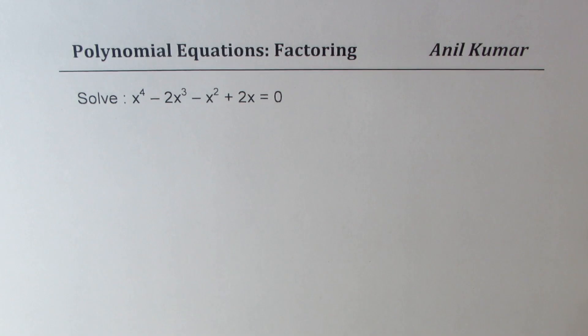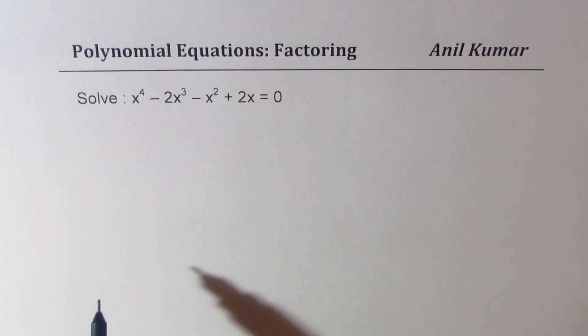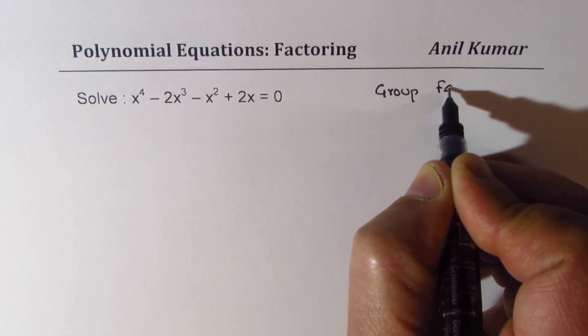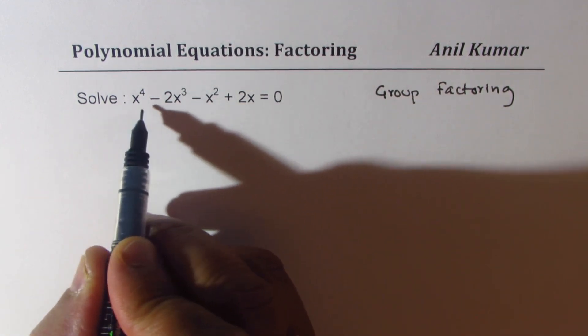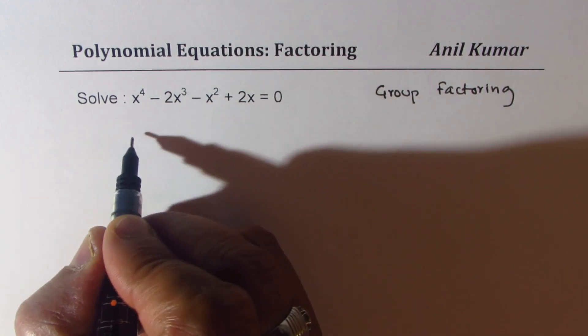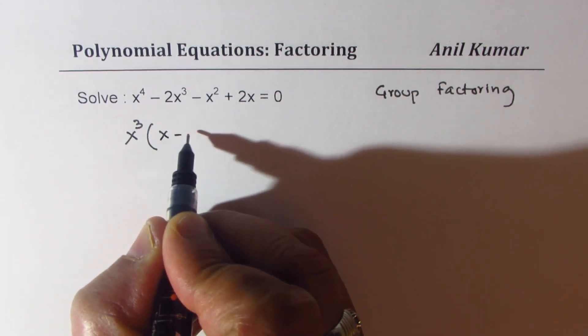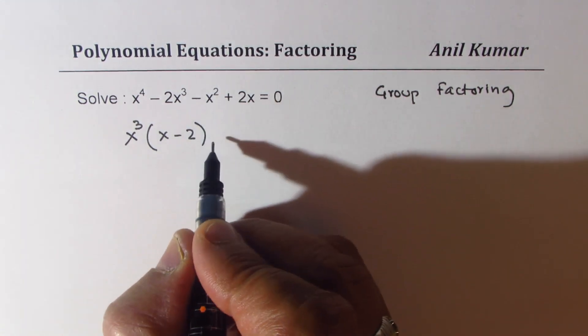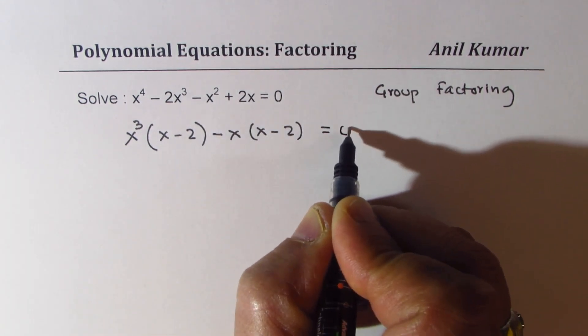Now let's take up part B, which is quartic equation x to the power of 4 minus 2x cubed minus x squared plus 2x. In this case, we can do group factoring. Making these two groups, from the first two terms I can take x cubed common. We get x minus 2. From the next two terms, we could take minus x common. That will also give me a factor of x minus 2 equal to 0.